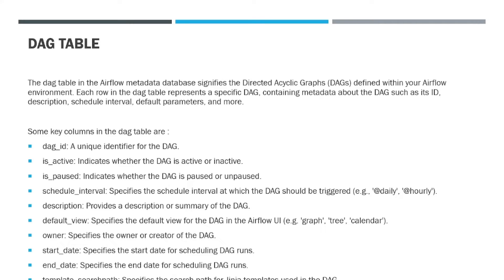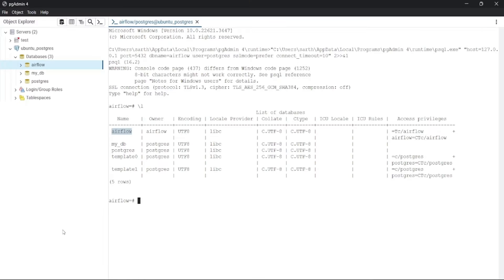Then owner, which specifies who owns the DAG. Then start_date, which specifies the start date for the scheduling of DAG runs. end_date, which denotes the end date when the scheduling of the DAG will stop. Then template_search_path, which specifies the search path for Jinja templates that will be used in the DAG. Let's have a look at this table.